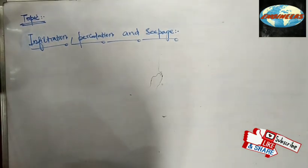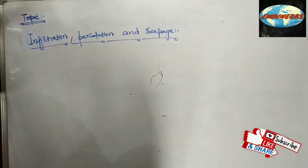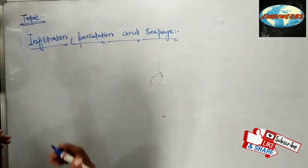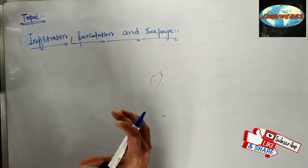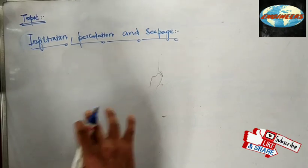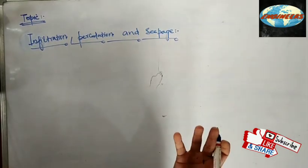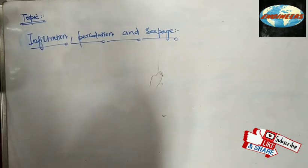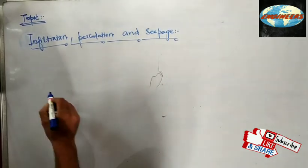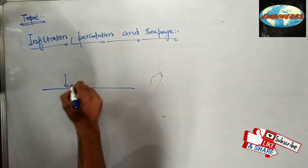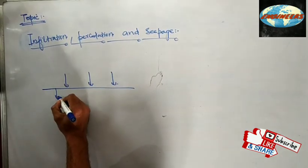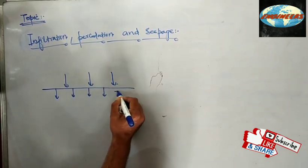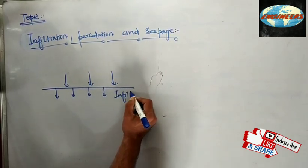What is infiltration? Infiltration is basically the term which defines when the water that is on the surface of earth — for example, in a rainfall event when the rain falls on the ground — the entry of water from the surface of earth inside is called infiltration.